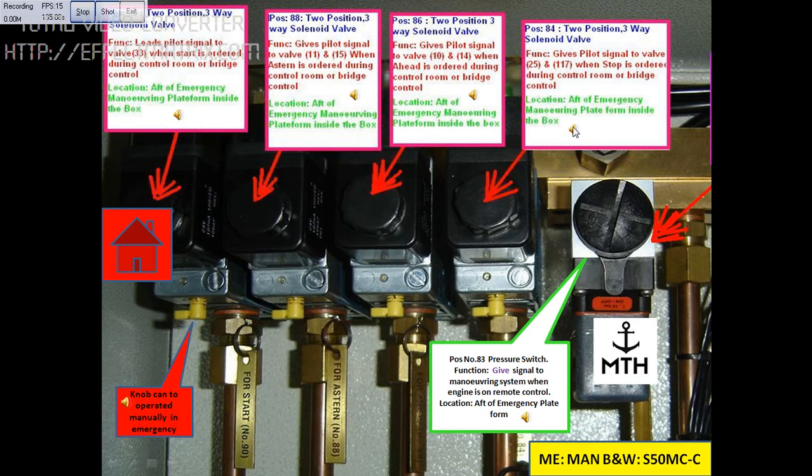This block is position number 84, which is a two position three-way solenoid valve. The function of this valve is to give a pilot signal to valve number 25 and 117 when stop is ordered either from control room or from bridge control.